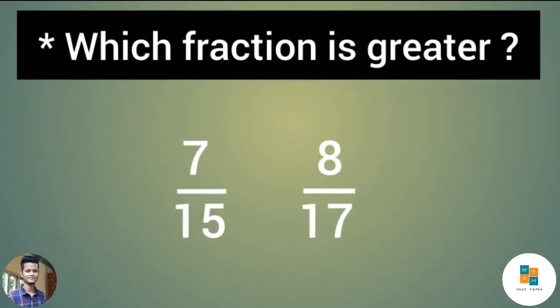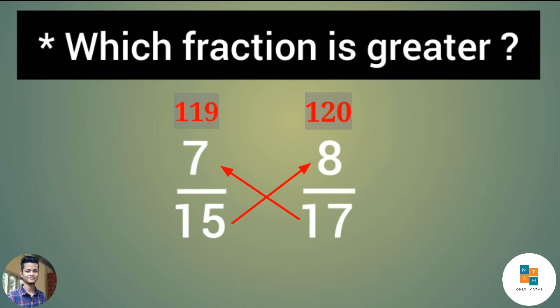Next example: 7/15 and 8/17 — which is greater? First, the first fraction's numerator is 7 and the second fraction's denominator is 17. Cross multiply: 7 times 17 is 119. And the first fraction's denominator is 15 and the second fraction's numerator is 8. 8 times 15 is 120. Since 120 is greater than 119, therefore 8/17 is greater than 7/15.